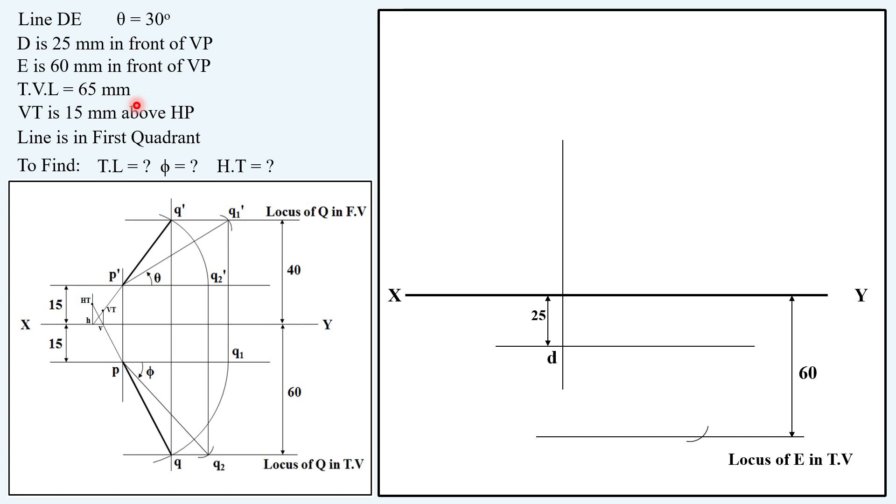Then, taking 65 mm, that is top view length, in the compass. Keeping on D, cutting this arc, and naming it as top view point of E. And joining this. We have obtained the top view of the given line. We can extend it back and we will obtain V here.